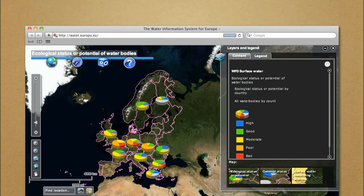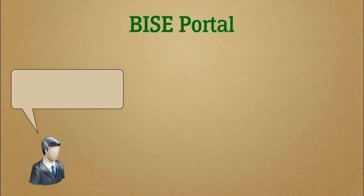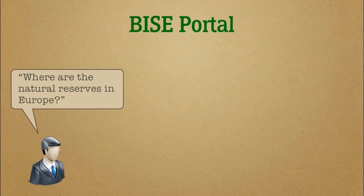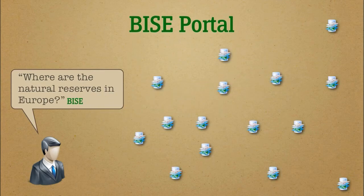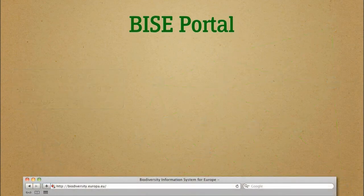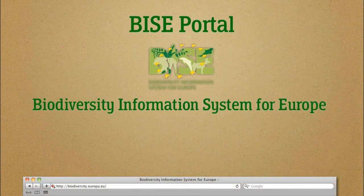The same thing happens when a user asks the Biodiversity Information System for Europe — BIES — where the natural reserves in Europe are. The answer to this question is also generated as a map on the BIES data portal.